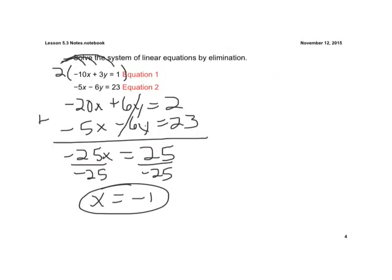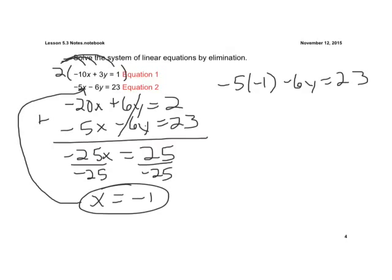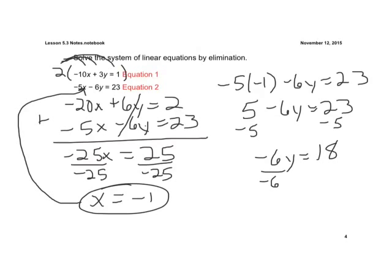Alright, the hard part's done. Now we substitute our x variable back into either equation. Let's use the bottom equation — substitute x into equation 2. So negative 5 times negative 1, not x anymore. Minus 6y equals 23. Negative 5 times positive 1 is positive 5 — two negatives equal a positive. Minus 6y equals 23. Subtract our 5. Negative 6y equals 18. Divide by negative 6.